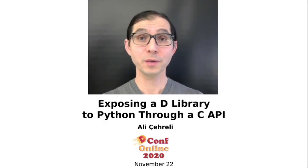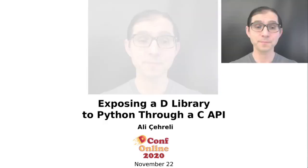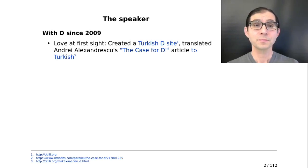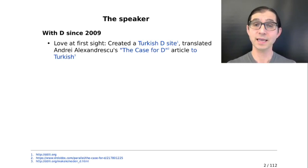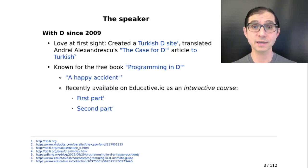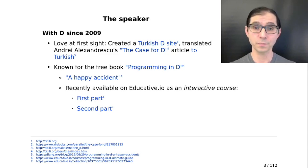Hello, everyone. I am happy to be with you on this second day of D-Conf Online 2020. My name is Ali Şehreli. I am a person who has been with the D community since 2009. As soon as I read Andrei Aleksandescu's The Case for D article, I translated it to Turkish and created a Turkish D site. I am known for the free book Programming in D, which has recently been released on Educative.io as an interactive course in two parts.